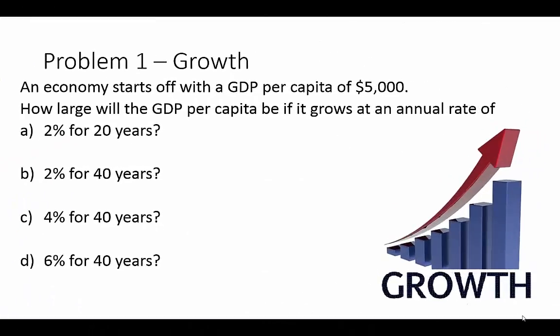Hello and welcome to Econ 202 Macroeconomics, Chapter 7 workout problem video. In problem one, we're going to do a problem related to growth. The percentage of growth: an economy starts off with a GDP per capita of five thousand dollars. How large will the GDP per capita be? It gives us four scenarios — the first is if it grows at two percent for 20 years.